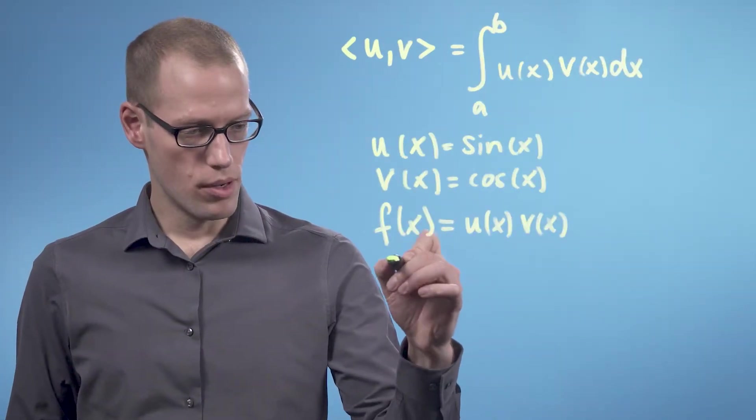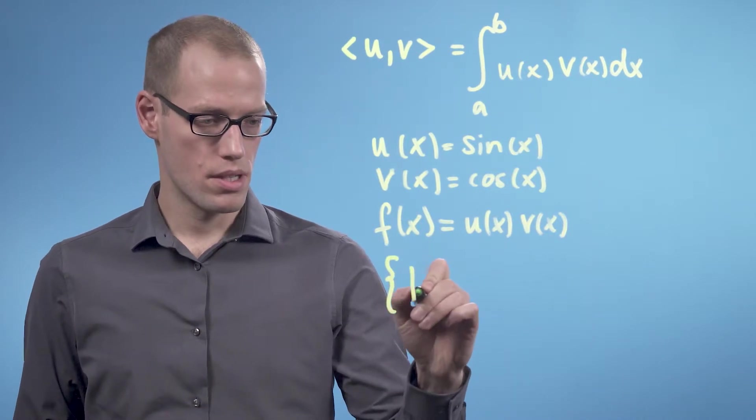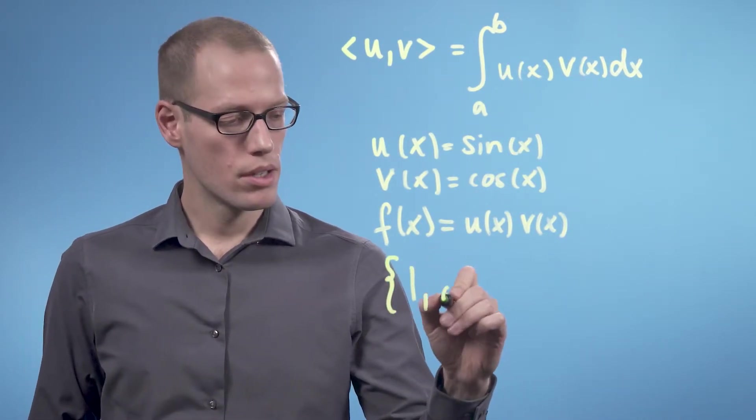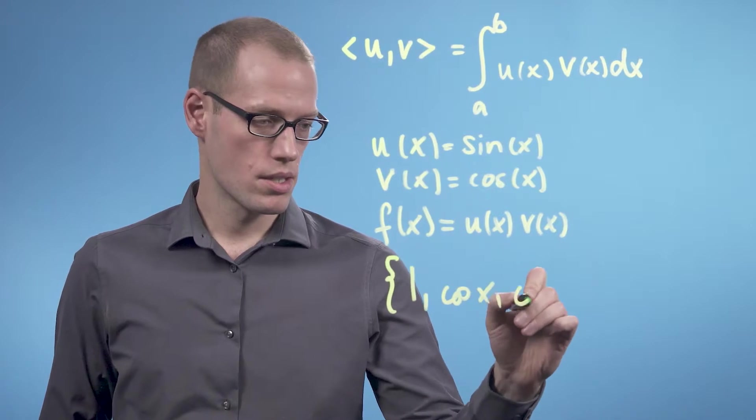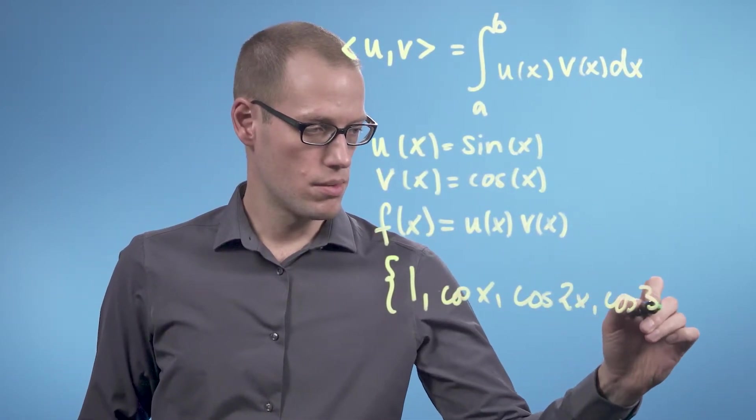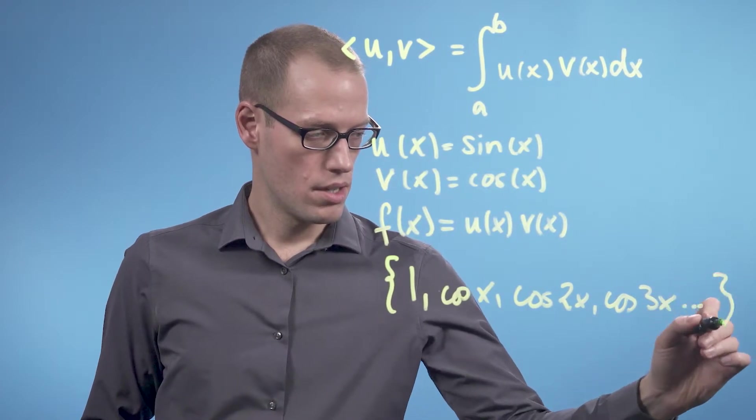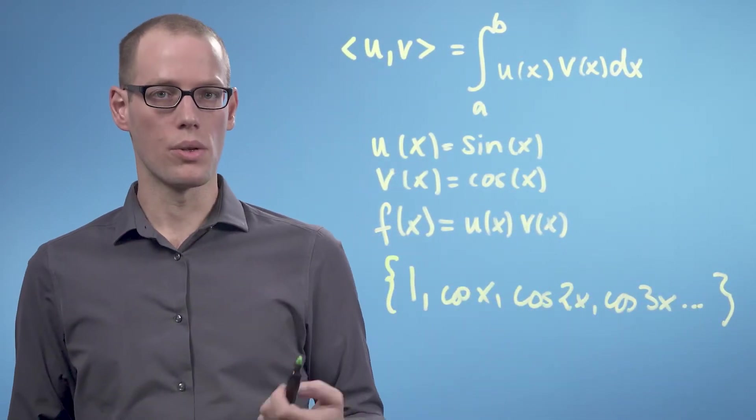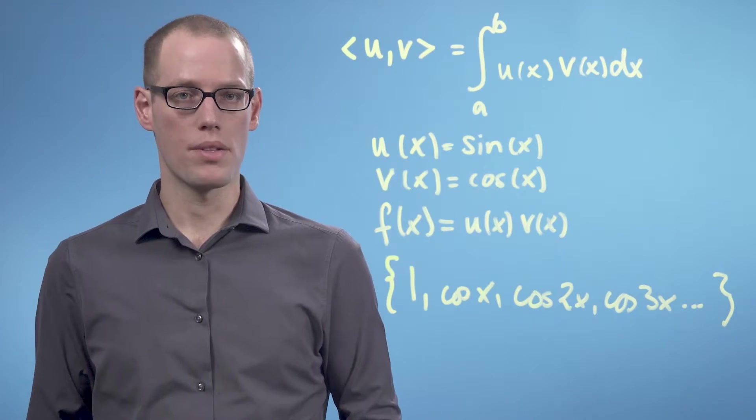And it actually holds that if we look at a set of functions, say 1, cosine x, cosine 2x, cosine 3x, and so on, that all of these functions are orthogonal to each other if we integrate from -π to +π.